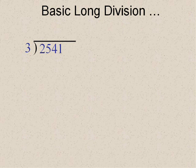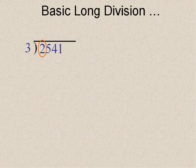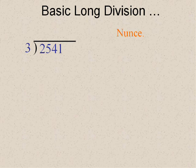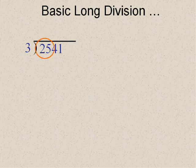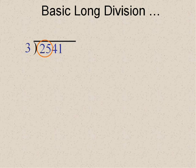Remember how we did this? We said how many times does three go into two? We looked at the first digit, didn't we? And of course in this case it went in none. So we didn't really put a zero. We just went to the next digit and said how many times does three go into twenty-five? And we made a guess.